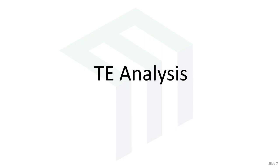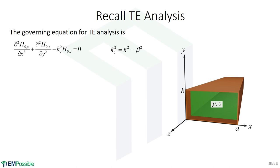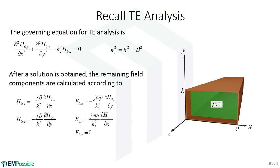Let's first do the TE analysis. Similar to the parallel plate waveguide, this is actually the harder analysis, and that has to do with how we apply the boundary conditions. For TE analysis, the Z component of the electric field is zero, so our differential equation solves for the Z component of H. We have a Laplacian expanded in Cartesian coordinates. Once we solve this and have an expression for H, we can substitute it back into the equations to calculate all the other field components.